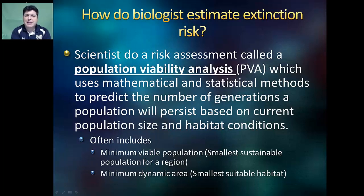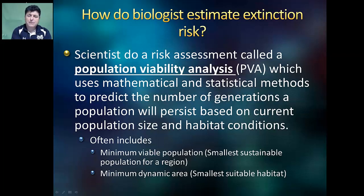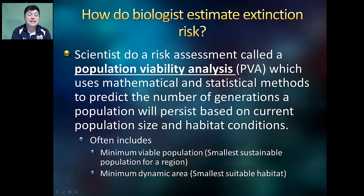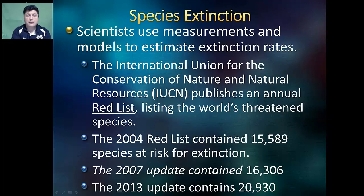How would a biologist estimate extinction risk? Scientists will do a risk assessment called a population viability analysis, which uses mathematical and statistical methods to predict the number of generations a population will persist based upon its current population size and habitat conditions. This often includes a minimum viable population assessment — determining the smallest number of individuals that will sustain a population in a given region — as well as a minimum dynamic area analysis, determining the smallest suitable habitat that can sustain a particular population.